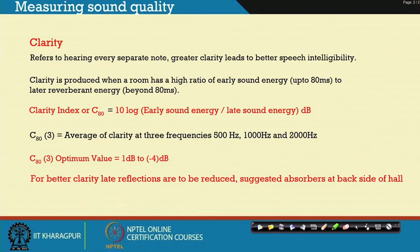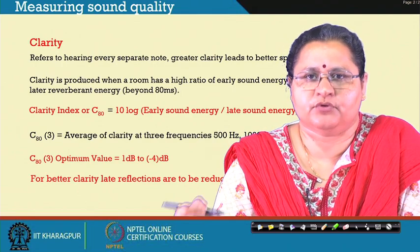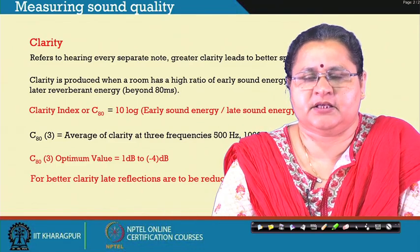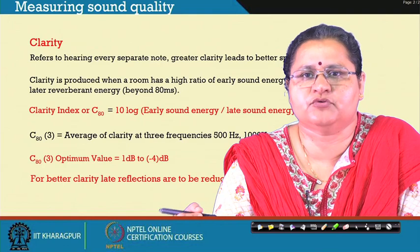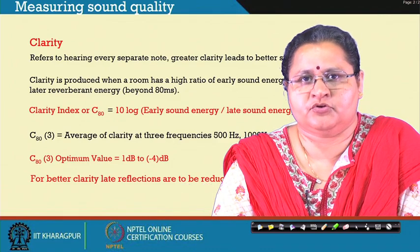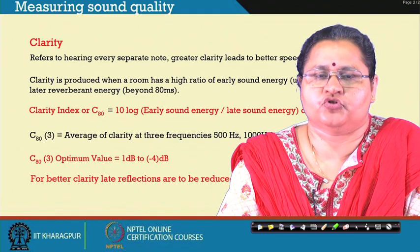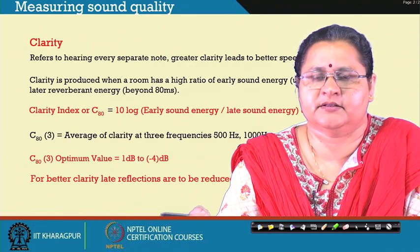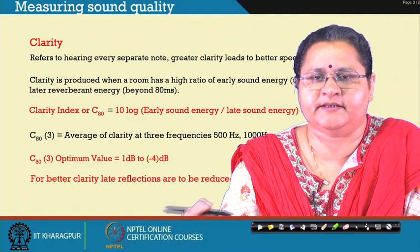For better clarity, late reflections are to be reduced — suggested absorbers are placed at the back side of the hall. You are trying to cut down the late sound energy, so within 80 milliseconds you are trying to reflect or diffuse the sound within the system, but beyond 80 milliseconds you are targeting to decay the sound. To get a higher value of clarity, you encourage early sound energy and not the late sound energy. So you need to put absorbers positioned such that sound reaches them after 80 milliseconds.